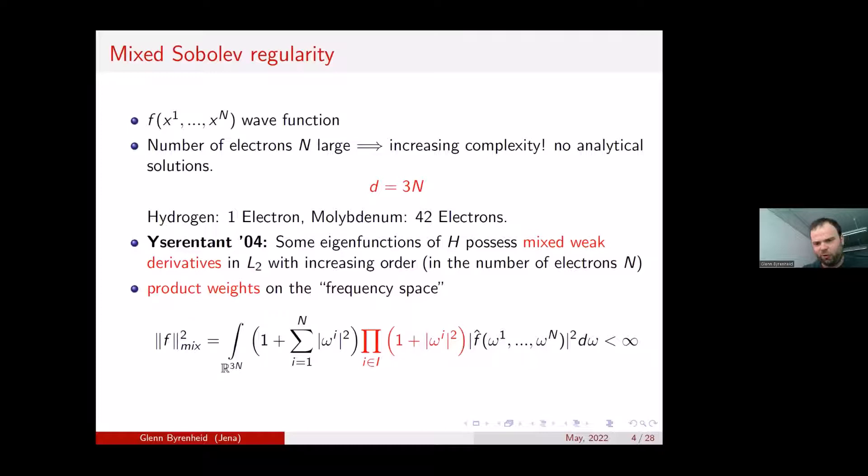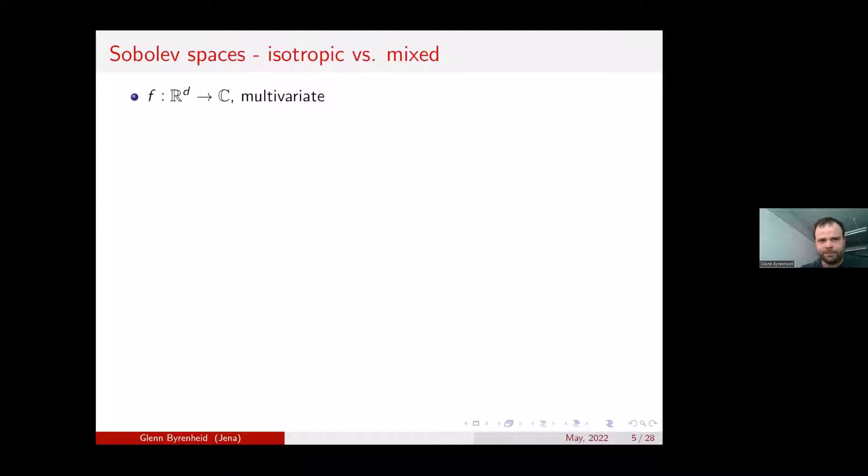Let us speak about Sobolev spaces — both isotropic and dominating mixed ones. We deal with multivariate functions living on R^d. We have two parameters: the smoothness parameter r and the integrability parameter p.